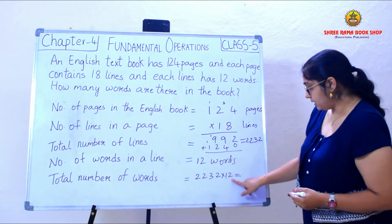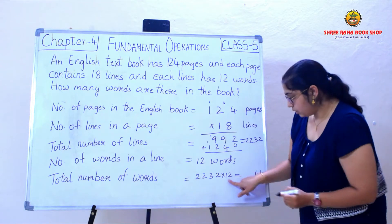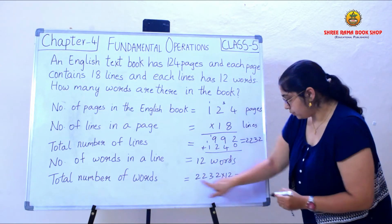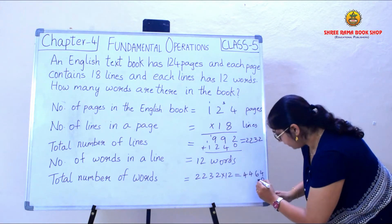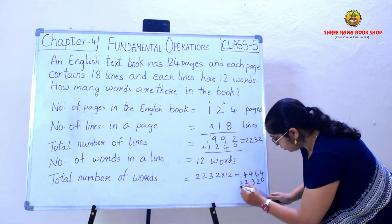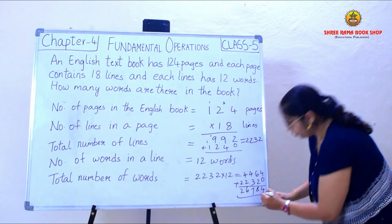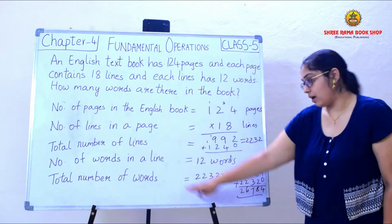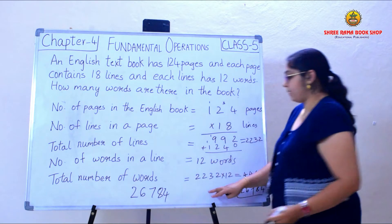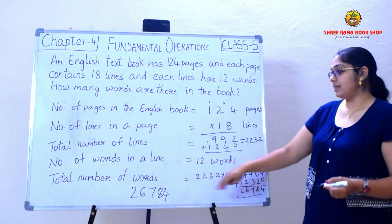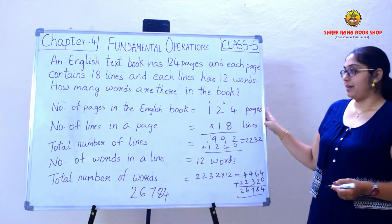Multiplying 2 into 2 is 4, 2 into 3 is 6, 2 into 2 is 4, 2 into 2 is 4. Then again 0, and the same number: 2, 3, 2, 2. When I add these, I get 4, 8, 7, 6, 2 — so the total number of words is 26,784. When I multiply 12 by the total number of lines I get the total number of words. This is how we write the statements for a word problem.